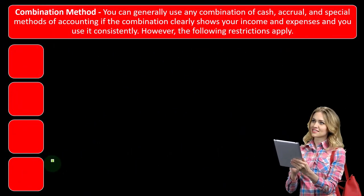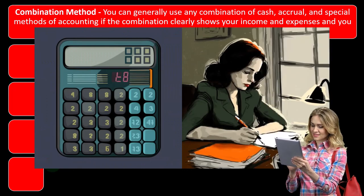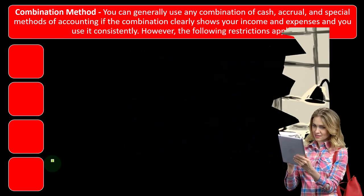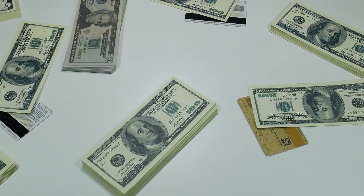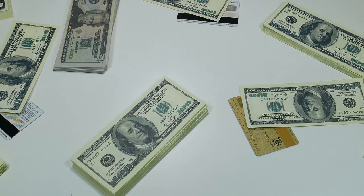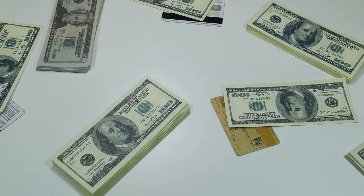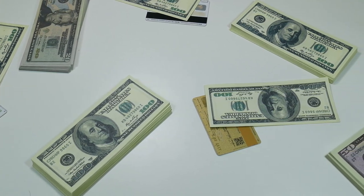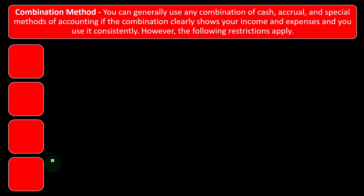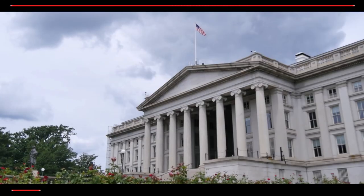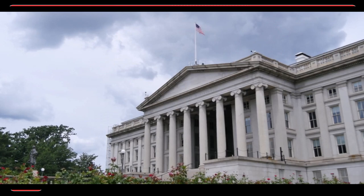If you were to change the accounting method — going back and forth from a cash to an accrual method — you can kind of manipulate the timing of income and expenses and do some tax manipulation. So the IRS wants to limit that by saying you can choose what method you want, but then in essence you keep to that method. And of course, there are some circumstances where the IRS might require an accrual method in some cases.